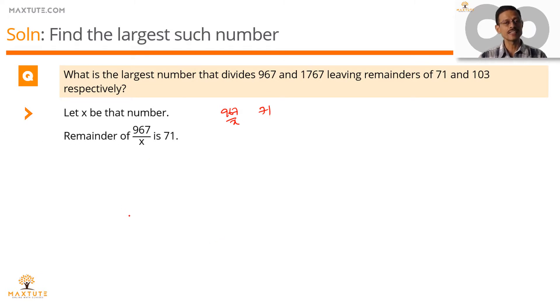So, we subtract 71 from 967, the resultant value will be divisible by x. 967 minus 71, 896 is divisible by x. Let's call this as inference 1.